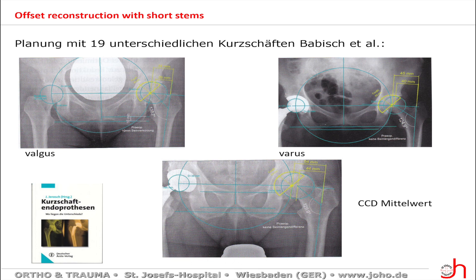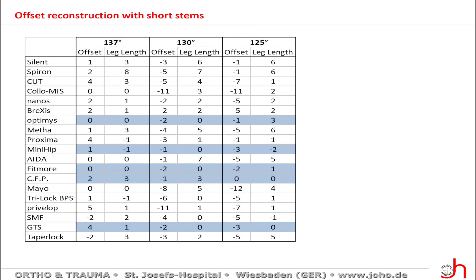This topic is published by Dr. Babisch. He performed some scenarios with valgus angles, varus angles, and neutral CCD situations. He made some planning and evaluated the possibility to reconstruct leg length and offset. The results show some prostheses with a big deviation of 10 millimeters or more, but other types of prostheses make a very precise reconstruction of offset, leg length, CCD angle, and so on.